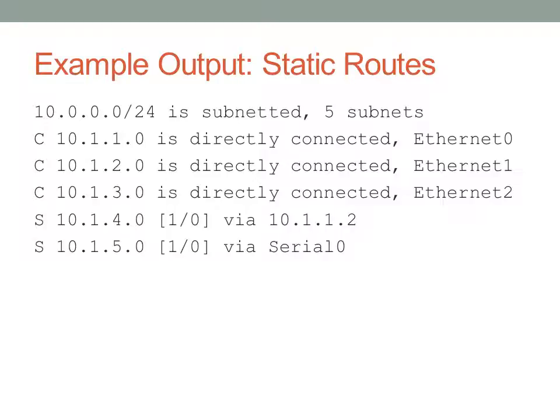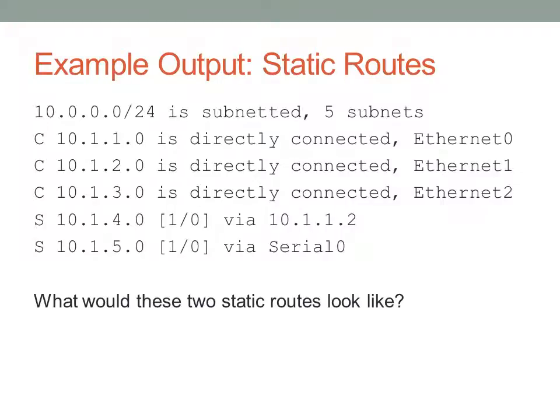You'll notice in square brackets next to the network we list 1/0. The first number is the administrative distance - that's the 1. The second number is the metric for that particular routing protocol. Since these are static routes, the metric is always going to be 0. I challenge you on your own time to look at the static routes in this routing table, go back and look at the previous slide, and write out the static route statement that I typed in to create these static routes.